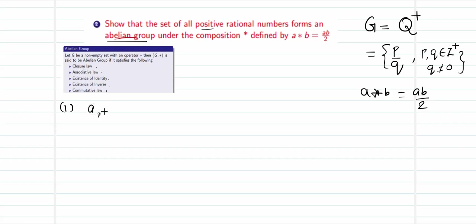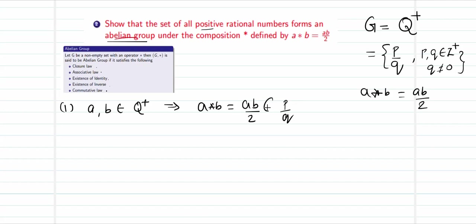For closure: I pick any two elements a and b that belong to Q⁺. When I do the binary operation a * b = ab/2, this is again of the format p/q and therefore belongs to Q⁺. So the closure law is going to be true.